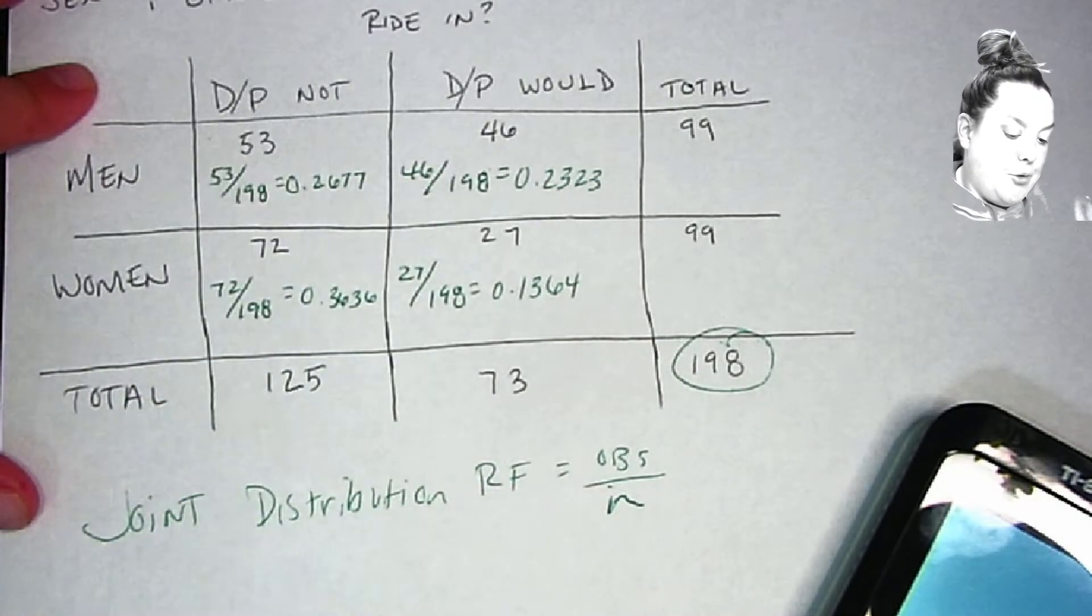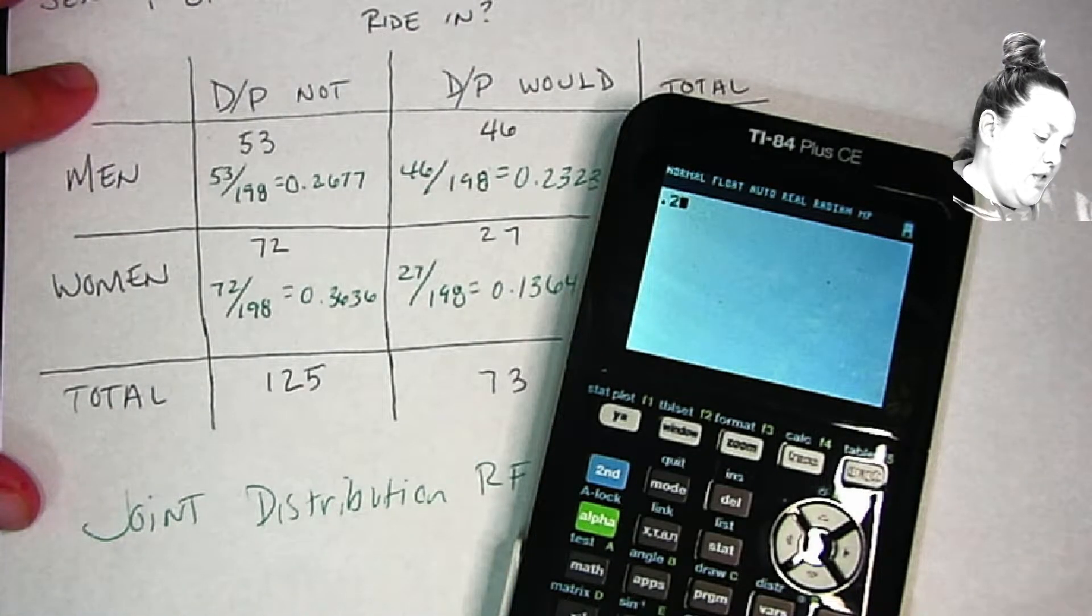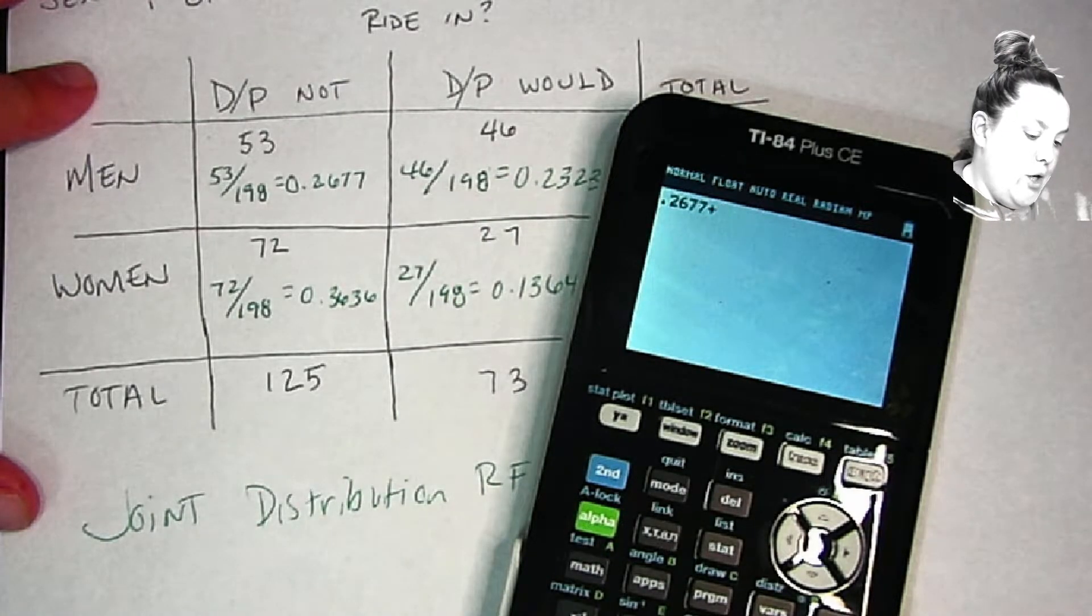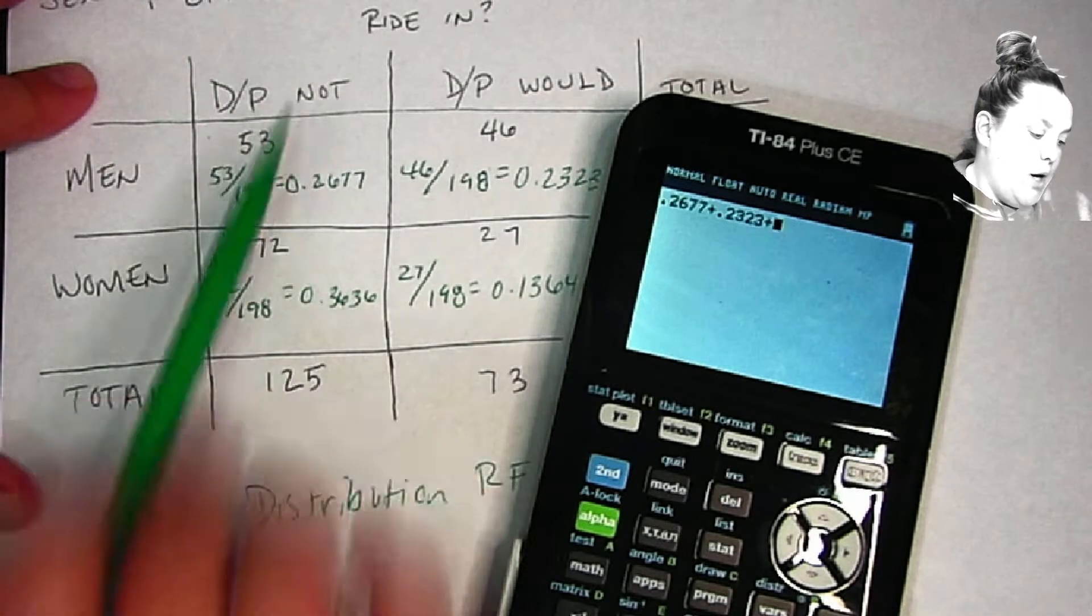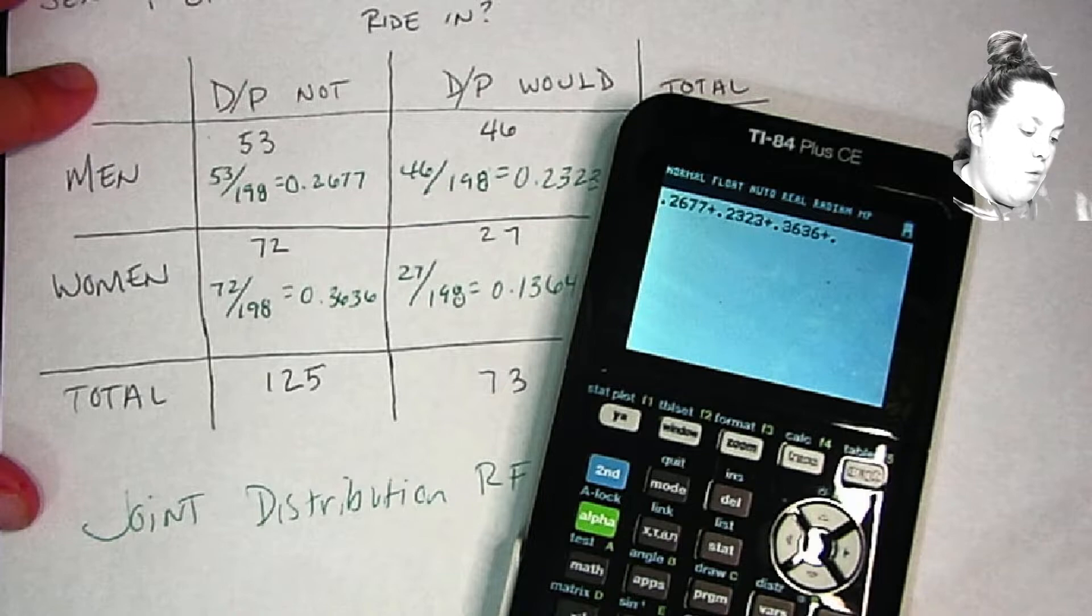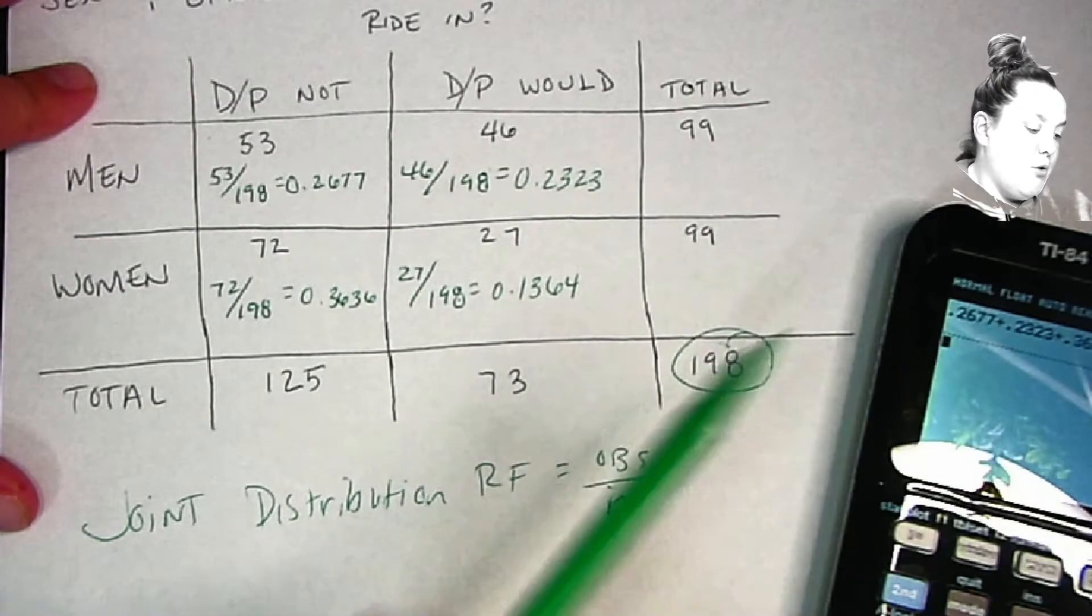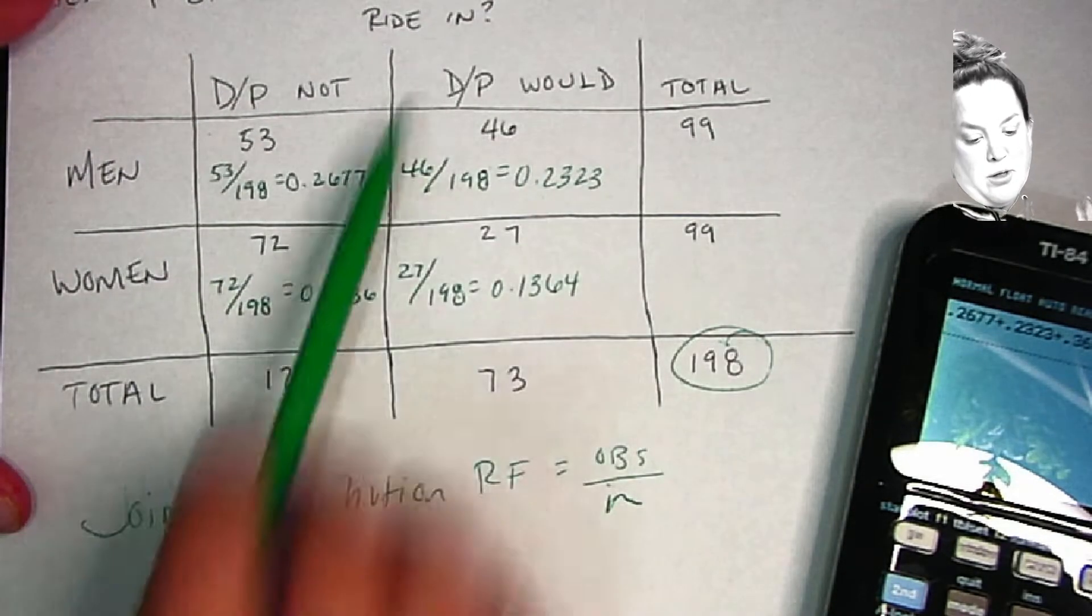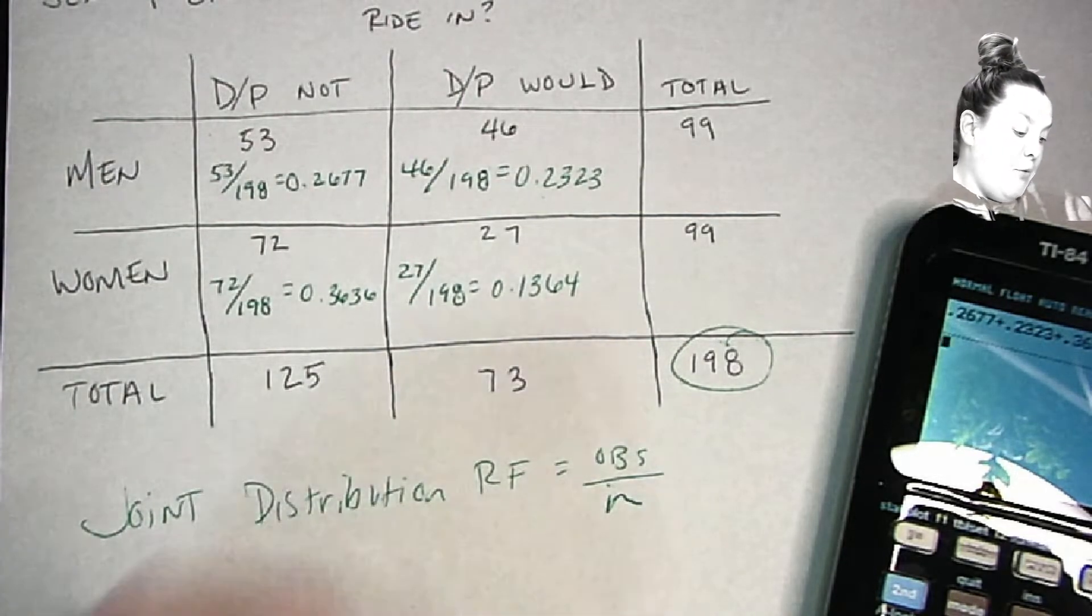So if I do 0.2677 plus the men that would 0.2323, and then the women that would not 0.3636, and then the women that would 0.1364, you can see that that comes out to be one, which is correct. And that is our relative frequencies for this joint distribution, so the distribution between these two variables.